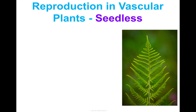Moving into vascular plants, we'll look at seedless vascular plants first, like ferns. They are the simplest vascular plants — they do have vascular tissue but resemble a lot of the properties of non-vascular plants because of their simplicity of structure.